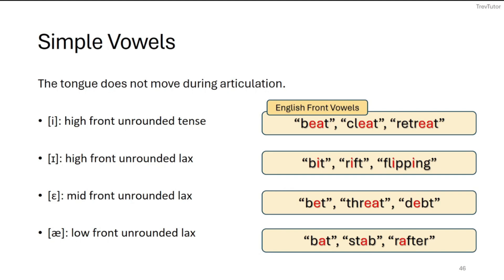Here are the four English front vowels. /iː/ is high and front; /ɪ/ is also high and front but not tense. /ɛ/ is mid and lax — not quite on the extreme boundary, a little closer to the center. Then we have /æ/, which is low front, unrounded, and lax.